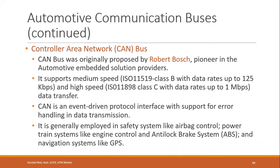The CAN bus was originally proposed by Robert Bosch, a leading company in automotive embedded solutions. It supports medium speed — ISO standard Class B, ISO 11519, with data rates up to 125 kbps — and high speed up to 1 Mbps. It is an event-driven protocol interface with support for error handling in data transmission. CAN bus is generally employed in safety systems like airbag control, powertrain systems like engine control, anti-lock braking systems, and navigation systems like GPS.